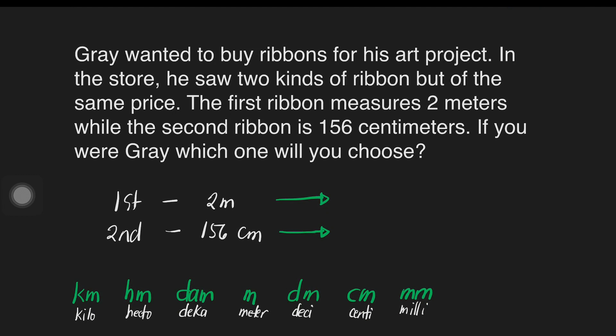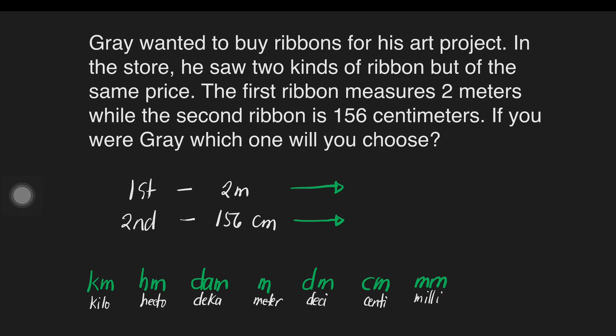Based on the given, which do you think we will convert? Let's see how many steps will that be using our chart here. So, from meter going to centimeter, that's 1, and then 2. Two steps. So, for every step, we will multiply by 10. This is times 10. This is times 10. So, it means we will just multiply 2 times 10 times 10. That will give us 200 cm.